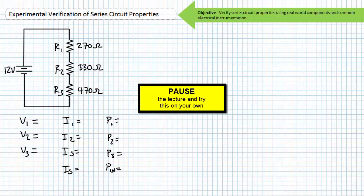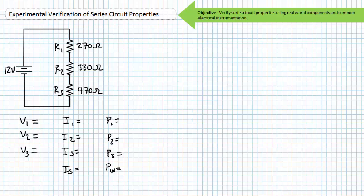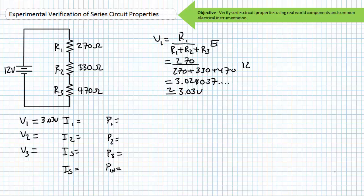Accept the challenge — you'll be glad you did when presented with a troubleshooting scenario with only partial information in the future. Here's how I'll solve for the desired quantities. We'll start by using the VDR to solve for V1, the voltage drop across resistor 1. The voltage divider rule states that the voltage across an element of interest equals its resistance divided by the total series path resistance, times the total applied voltage. Substituting in the necessary values, we find V1 to be approximately 3.03 volts.